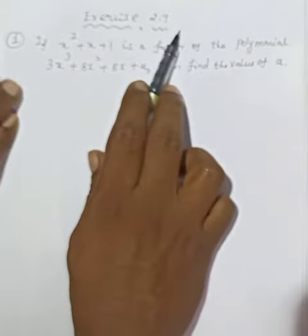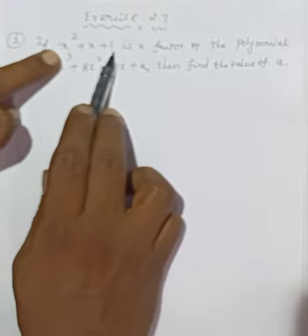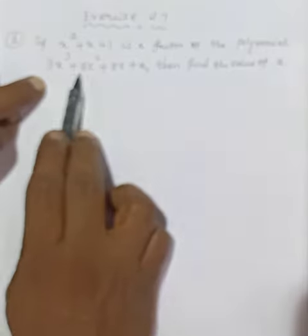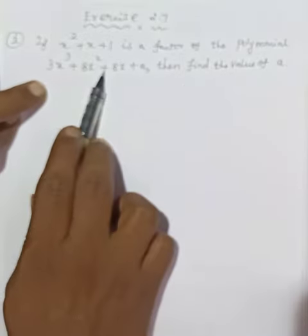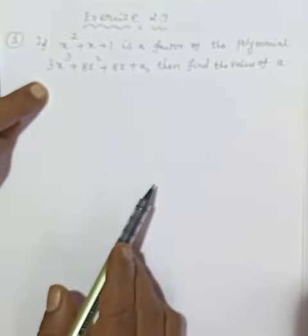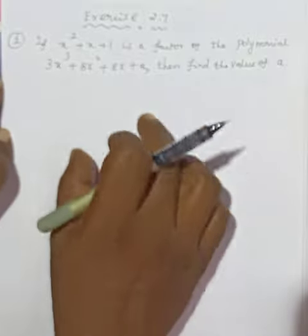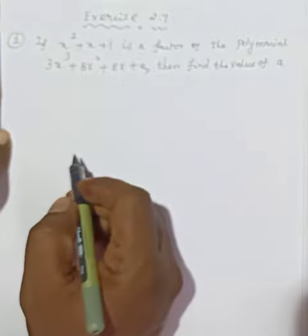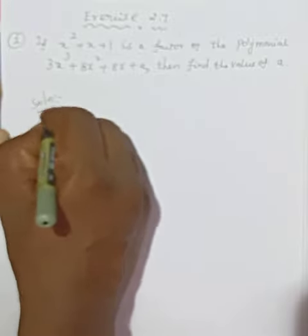Hi students, Exercise 2.7, problem number 2. If x squared plus x plus 1 is a factor of the polynomial, then find the value of a. When the factor is zero, the answer is zero, so we'll divide using the factor method.